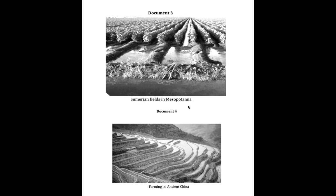Here are Sumerian fields in Mesopotamia. Here are the rows of crops, and here are irrigation ditches in between the rows of crops.